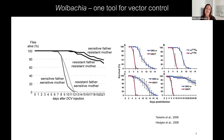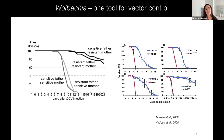Wolbachia was first shown to inhibit virus replication in Drosophila melanogaster in two papers that came out side by side from Teixeira and Hedges in 2008. In both papers, they showed that the Wolbachia passed down through the maternal line was able to protect these insects from Drosophila C virus, a virus that would kill the insect early on. Flies without Wolbachia, shown in light gray, die earlier than flies that carry Wolbachia, so Wolbachia was shown to provide resistance and tolerance to these viral infections.